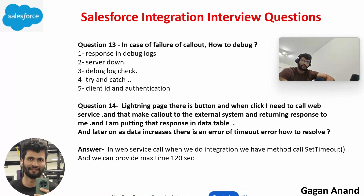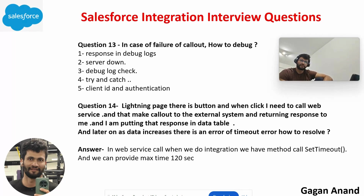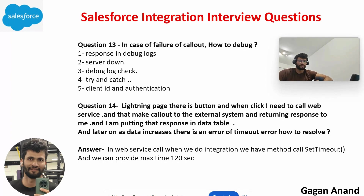Fourteenth question: there's a Lightning page with a button — when clicked, it calls a web service and makes a callout to an external system, returning the response to a data table. But as data increases, you get a timeout error. How do you resolve callout timeout errors? In web service callouts, there's a method called setTimeout. If the timeout is set too low, you'll get a timeout error. To fix it, increase the timeout value — you can increase it up to 120 seconds — which should resolve the timeout issue.